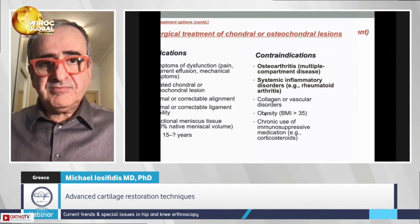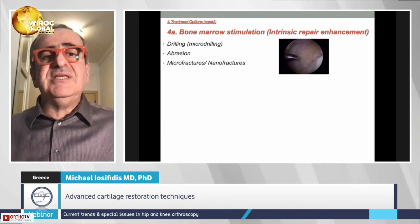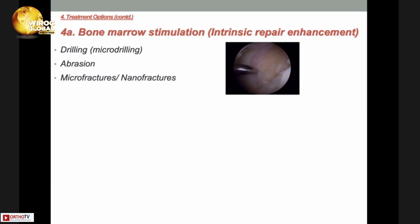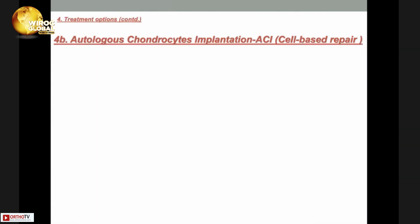For the last 60 years we have had bone marrow stimulation techniques — an interesting repair enhancement. As with the cartilage paradox, we drill or microfracture the subchondral bone; through this penetration, blood and bone marrow elements come to the lesion site and form a fibrin clot. The fibrin clot provides the environment for fibrocartilage formation, but this fibrocartilage lacks the ability to withstand applied mechanical loading long-term — often deteriorating after five years.